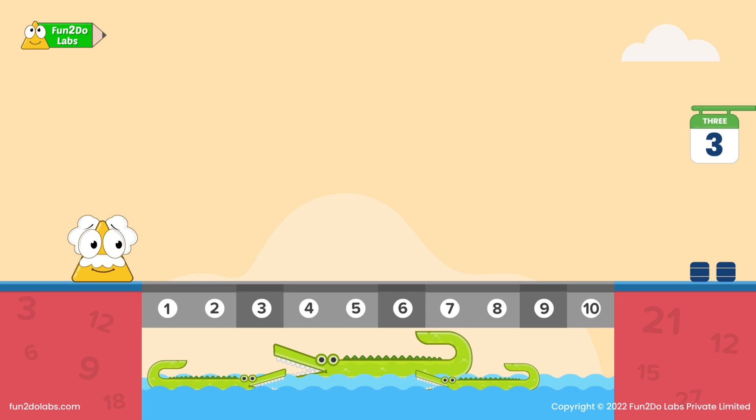He notices a number written on the board. The board shows 3. That means to cross the river, I need to jump on stones that are multiples of 3. Alright?